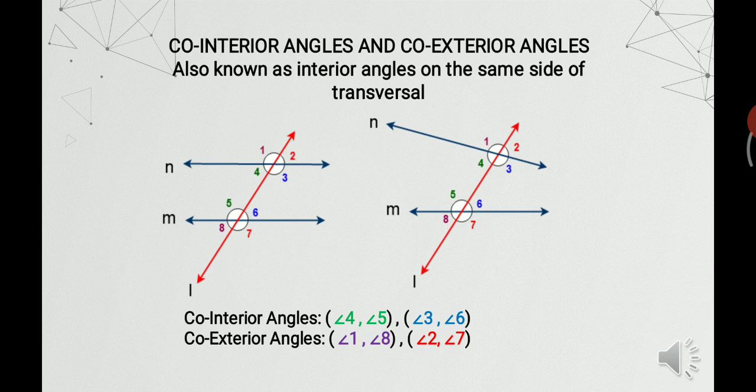Co-interior and co-exterior angles are also known as interior angles on the same side of the transversal, or you can call them allied interior angles or allied exterior angles. On the left hand side of the transversal, angle 4 and angle 5 are in the interior of the two lines, so we call them co-interior angles. Angle 1 and angle 8 are in the exterior and also on the same side of the transversal, so we call them co-exterior angles. Similarly, you can find the other pairs of co-interior and co-exterior angles.